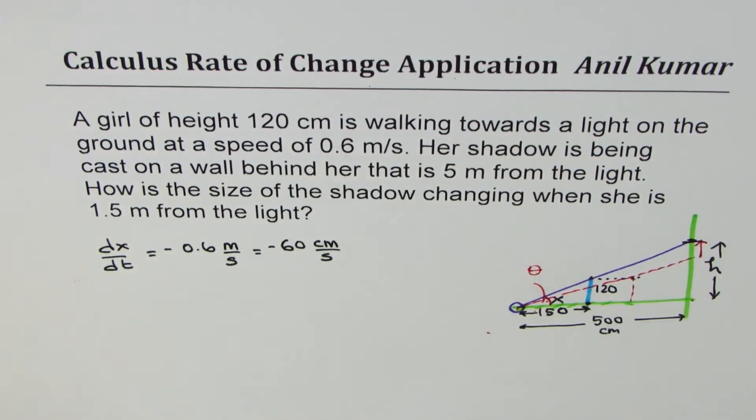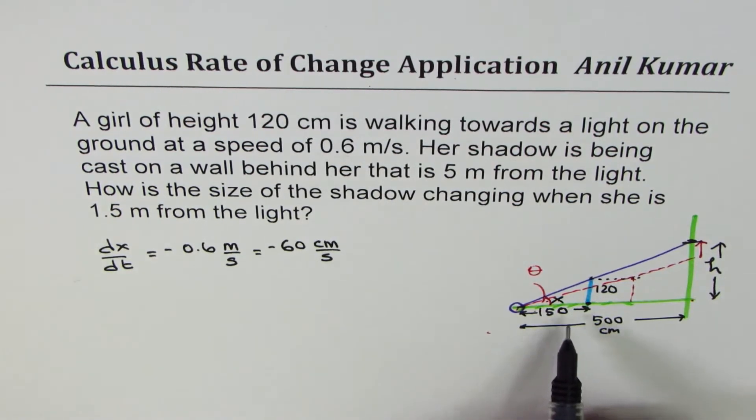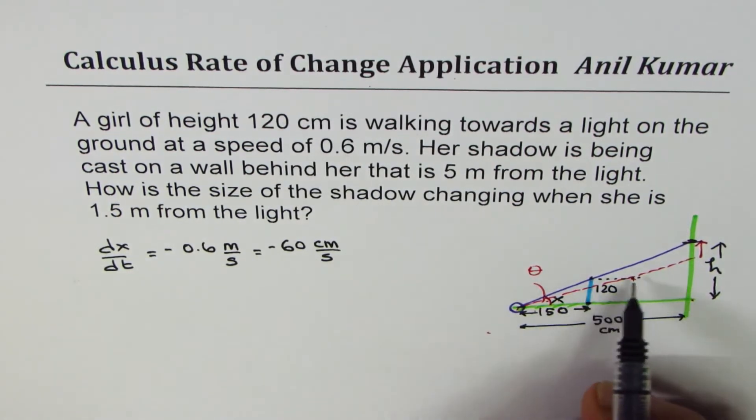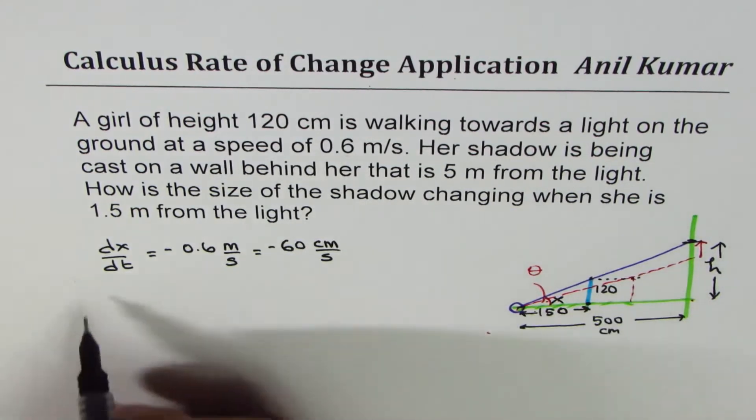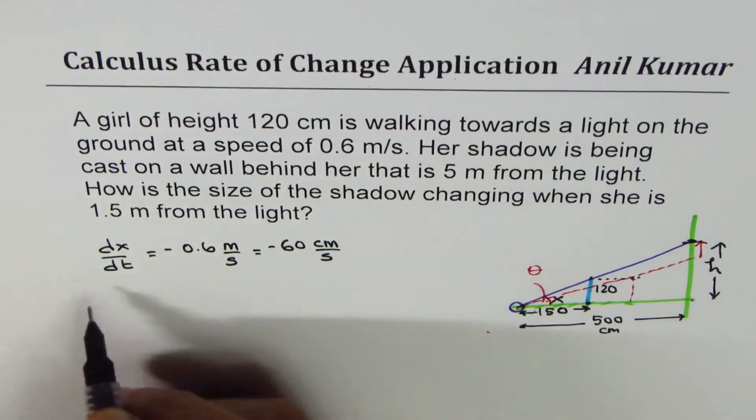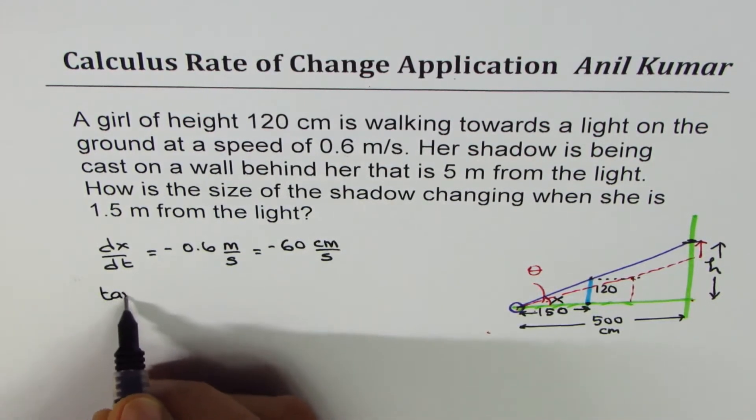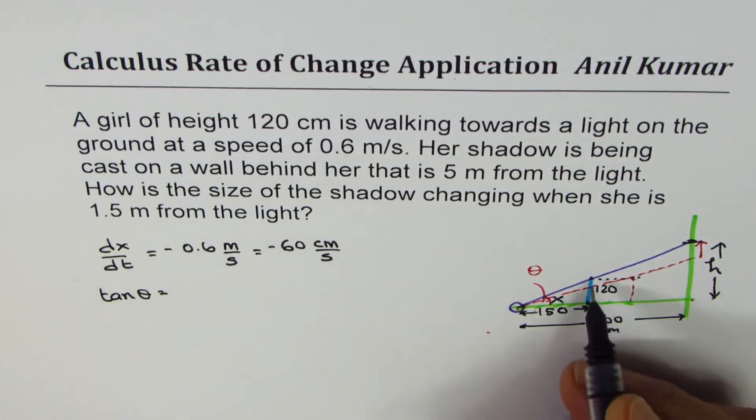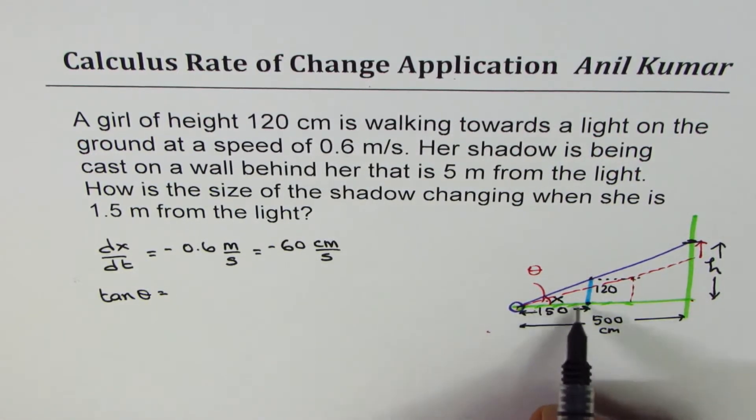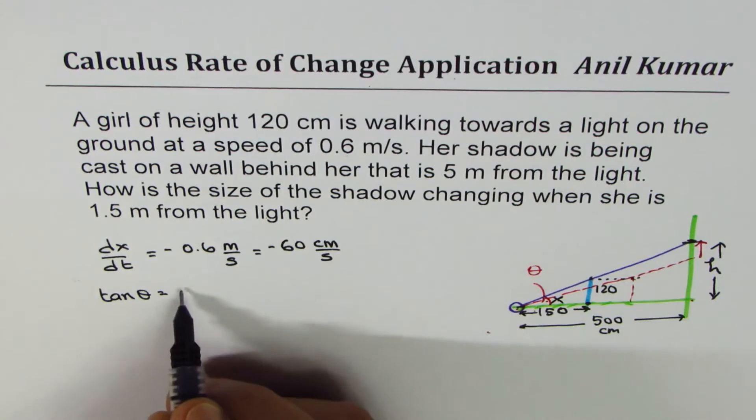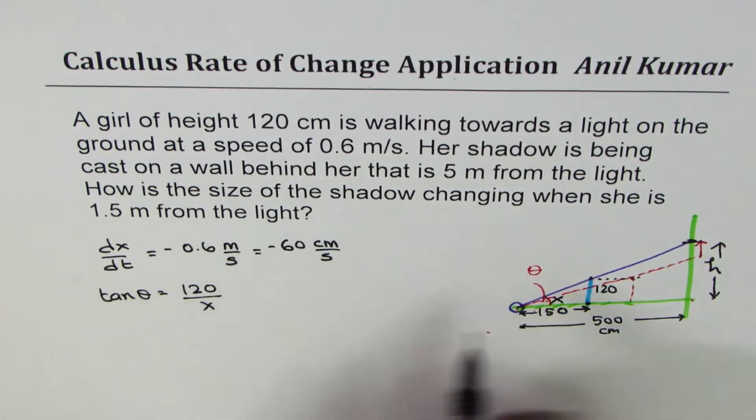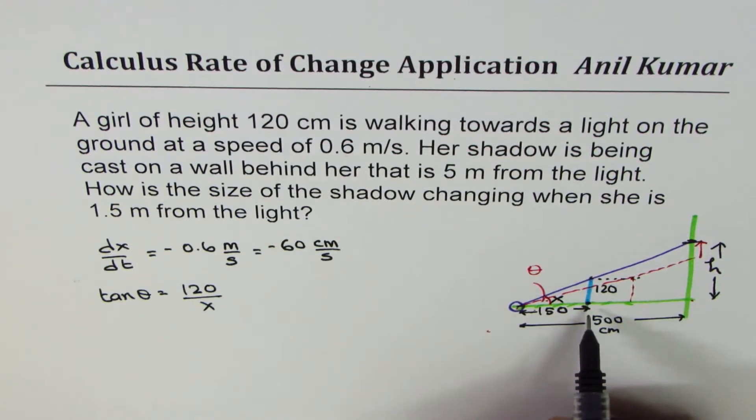And so what I have decided here is to write equations in terms of theta. Now, whatever may be the position of the girl, we could say tan theta, this angle, is equal to 120 over x, the distance from the source of light. Tan theta is 120 over x. Since that is the height of the girl.